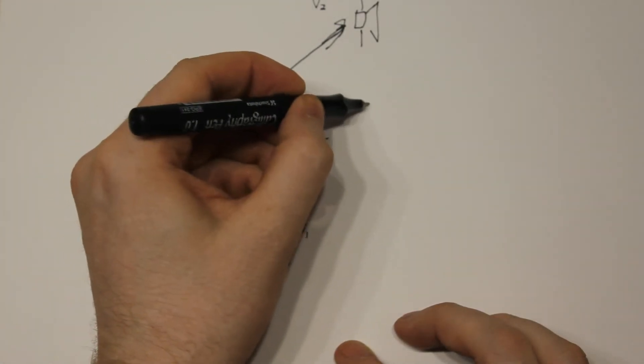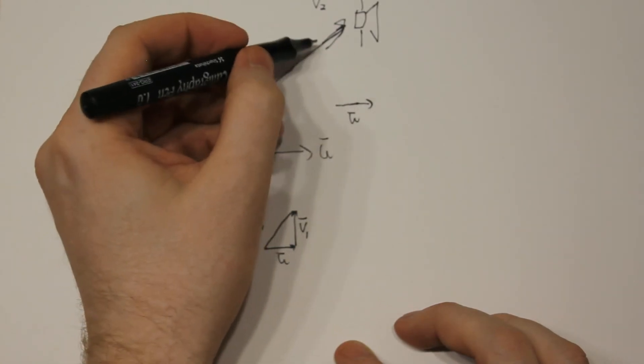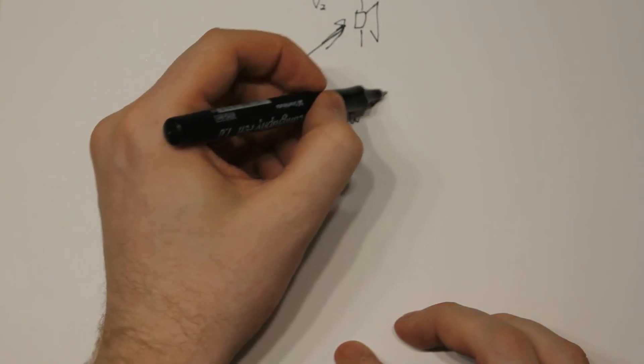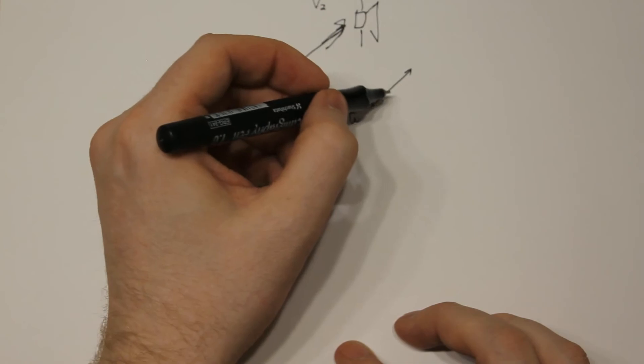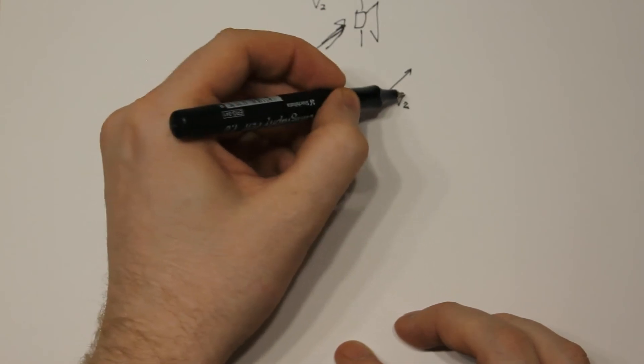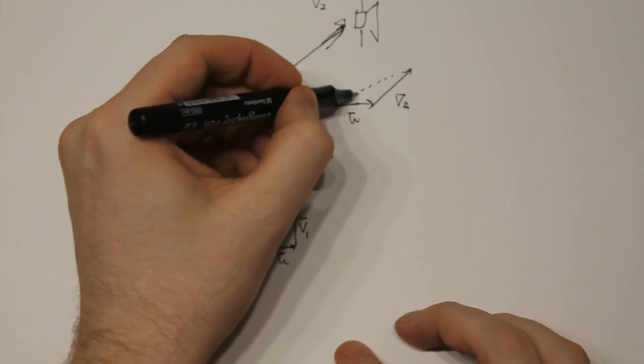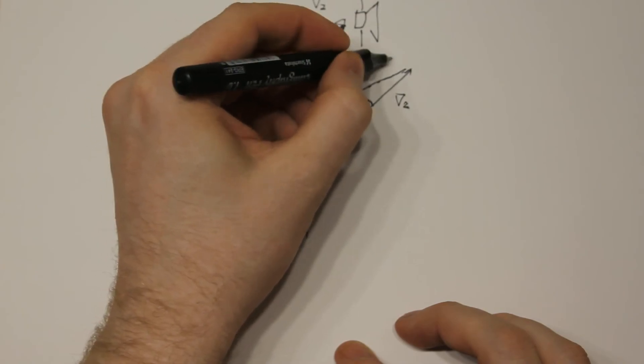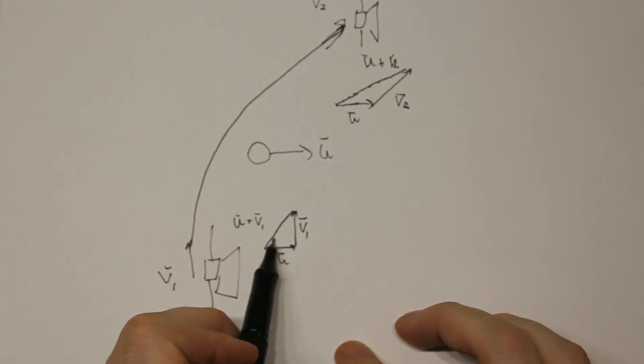But now our exiting vector is going out here. This is v2, and we can see that the sum of these two vectors, so that's u plus v2, this is definitely greater than this vector was before.